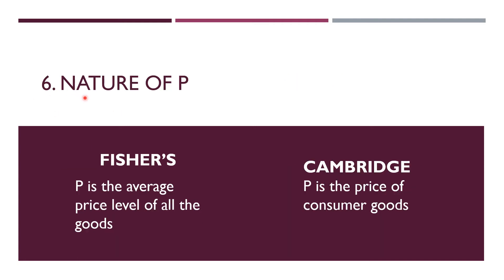The next point is the nature of P. In Fisher's case, P is the average price level of all goods. In the Cambridge case, P refers specifically to the price level of consumer goods. This is another notable difference between the two schools of thought.